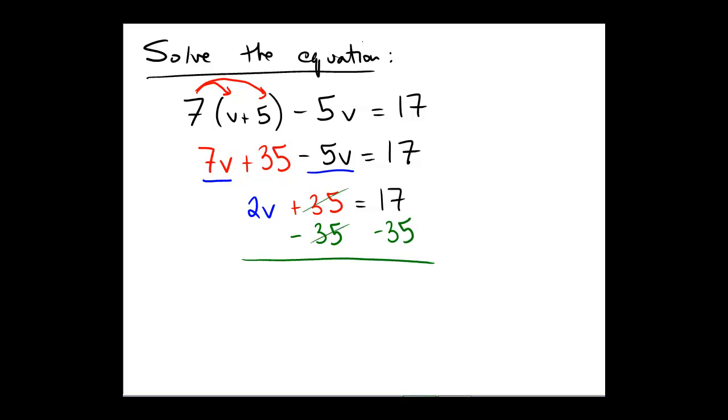So, 35 and 35 are gone, 2v is left over, 17 minus 35 would be negative 18.